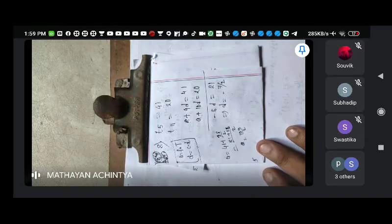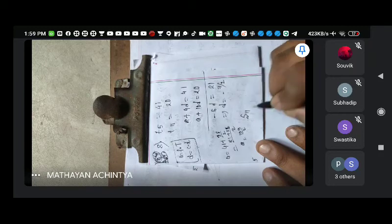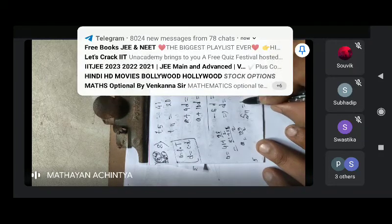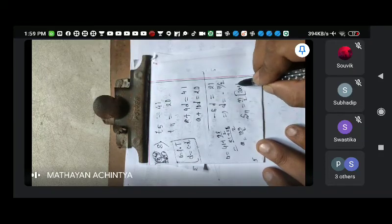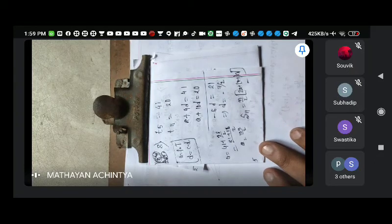If you do this, the sum of its first 11 terms means S11. n by 2 into 2a plus n minus 1 into d. That's it.